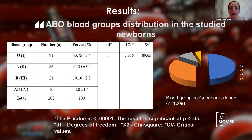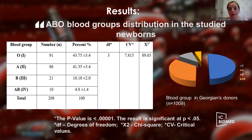The least distributed characteristic was the AB blood group — only 10 newborns out of 208, which is 4.8%, had AB blood group. We compared our results with the distribution of ABO blood groups in blood donors from a previous study of the same region, where the total number of blood donors was 109. We found that half of the studied donors carried the O blood group, and 47 donors out of 109 belonged to the AB blood group.